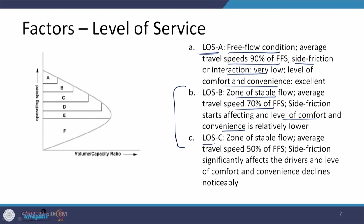LOS C is again a zone of stable flow, so up to this point we have a stable condition. The travel speed is around 50 percent of the free flow speed. Side frictions affect drivers, and the level of comfort and convenience starts declining because speeds are lower and more interaction occurs between vehicles.